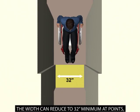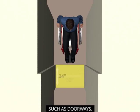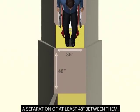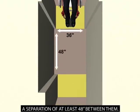The width can reduce to a 32 inch minimum at points, such as doorways. Segments with a reduced width are limited to a depth of 24 inches and there must be a separation of at least 48 inches between them.